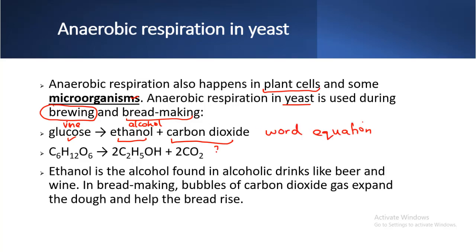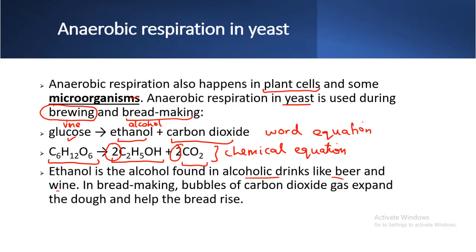For the chemical equation, refer here. C6H12O6 represents glucose, and C2H5OH is ethanol — there are two molecules of ethanol and two molecules of carbon dioxide. Ethanol is the alcohol found in alcoholic drinks like beer and wine. In bread making, bubbles of carbon dioxide expand to make the dough rise.